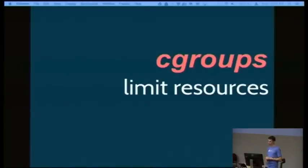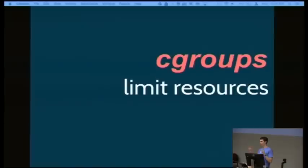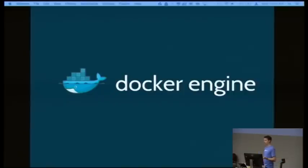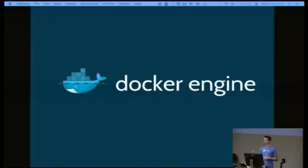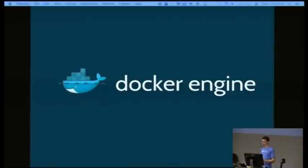So cgroups essentially allow us to limit resources and count them. All these technologies — namespaces and cgroups — are combined together into what we call a container. This is a completely abstract thing that exists only in user space; the kernel isn't really aware of it as a container. So we need user space tooling to bring it all together. The one that's been really exciting for the last year and a half — and that a lot of people have been talking about — is the Docker engine. Docker did a couple of things we hadn't had before: it gave these things a name that you could fetch over the internet.